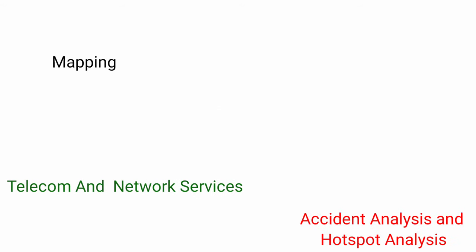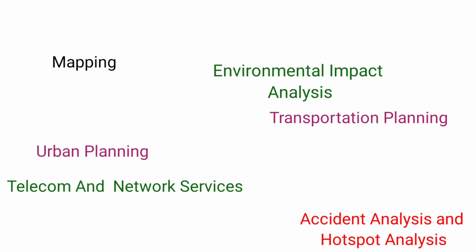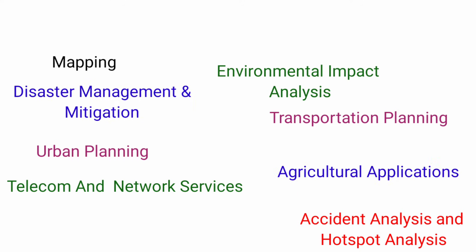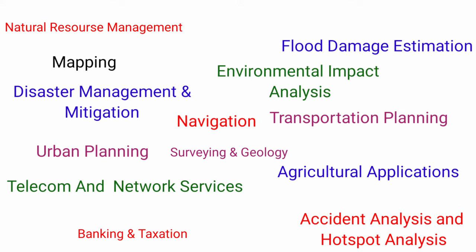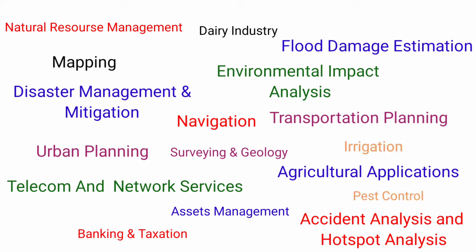Geographical information systems have a wide range of applications. To list a few: mapping, telecom and network services, accident analysis and hotspot analysis, urban planning, transportation planning, environmental impact analysis, agricultural applications, disaster management and mitigation, navigation, flood damage estimation, natural resource management, banking, taxation, surveying, geology, assets management and maintenance, planning and community development, dairy industry, irrigation water management, pest control management, and varied applications in pandemics, and more.